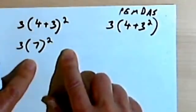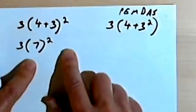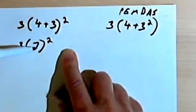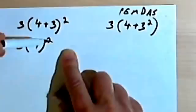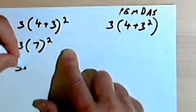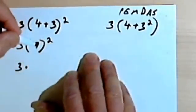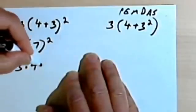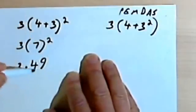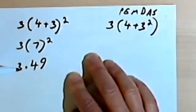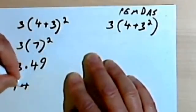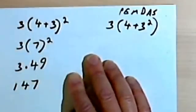My order of operations tells me to look for exponents, which I have. So I'm going to take 7 and raise it to the second power, or square it. That's going to give me 3 times 49. Now the only thing I've got left is multiplication, so I'm going to multiply 3 times 49, and that's going to give me 147.